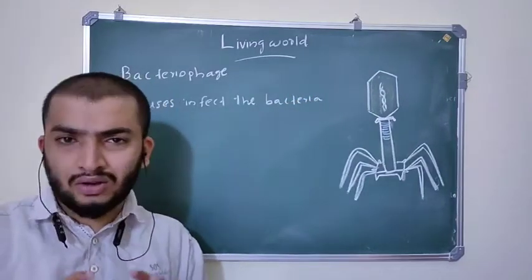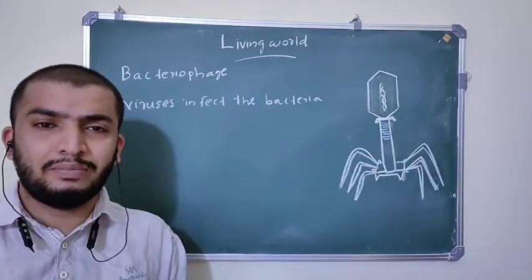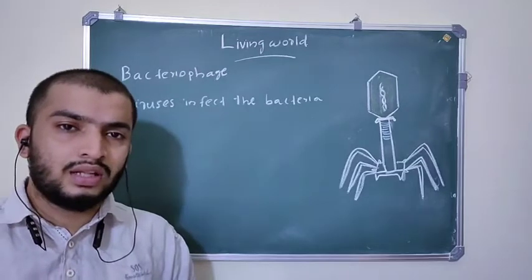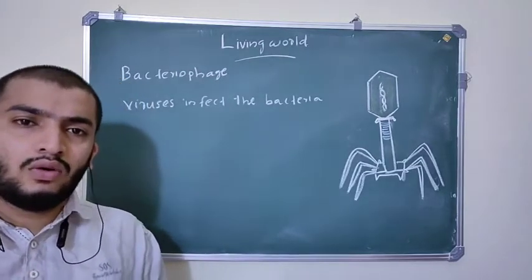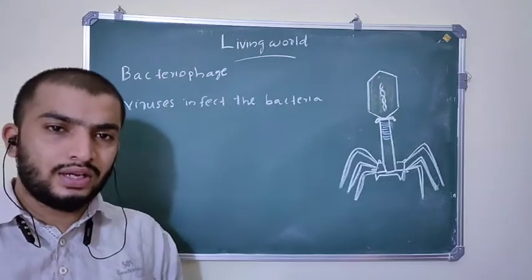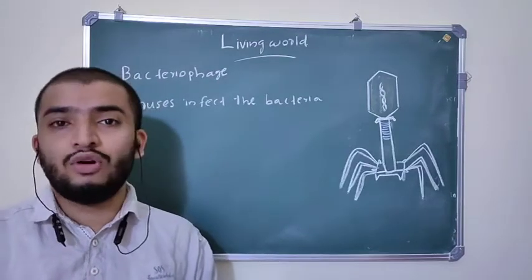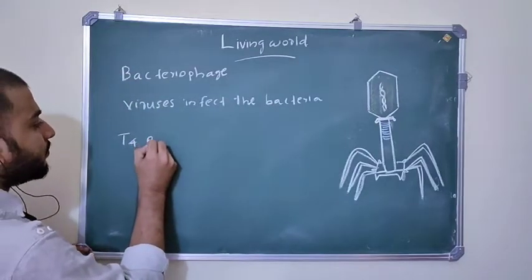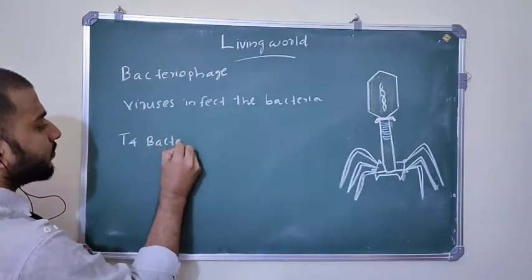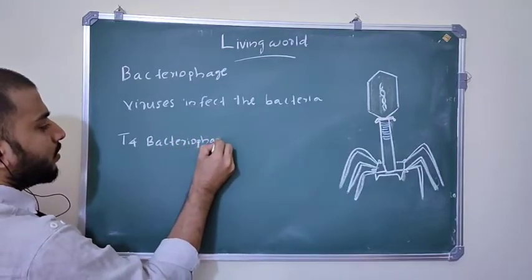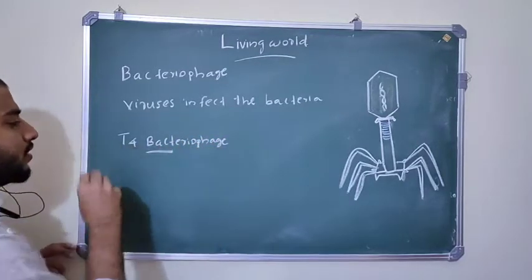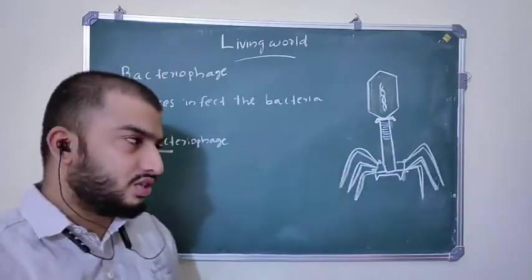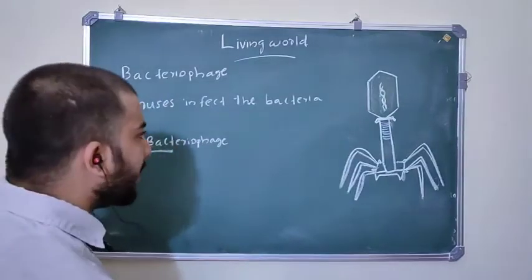Bacteriophages have a complex or atypical structure. We will study the detailed structure of Bacteriophage. There are different types of Bacteriophages, and in this chapter we are going to study the structure of T4 Bacteriophage. This is the structure of T4 Bacteriophage — something like a complex structure. What are the parts of Bacteriophage?